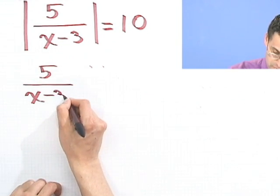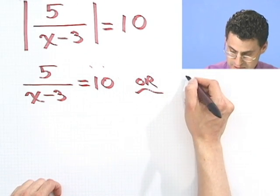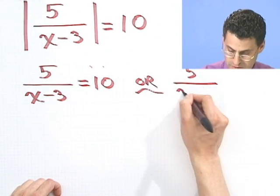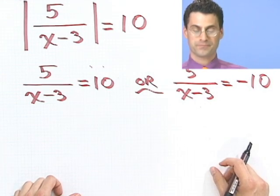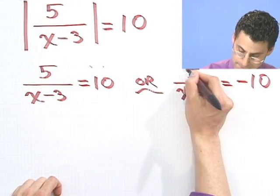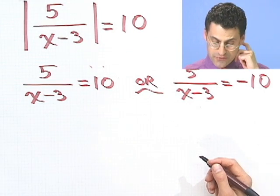5 over x minus 3 equals 10. And the other one is 5 over x minus 3 equals negative 10. Okay. So now we solve these things. So how would you solve this? Well, there are a variety of ways. One thing you could do, for example,